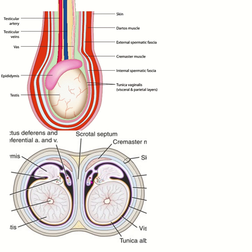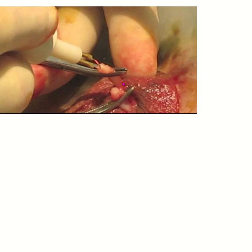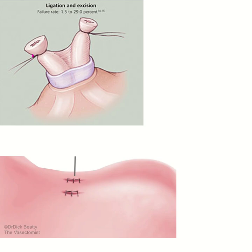During selection of the vas deferens, care must be taken to avoid the pampiniform plexus and testicular artery. The testicular artery is usually situated posteriorly and laterally on the surface of the vas deferens. The pampiniform plexus, when dilated, is known as varicocele. After separation of the vas deferens, it is divided, then tied with suture, cauterized, or folded and clipped, and then the scrotal skin is closed.